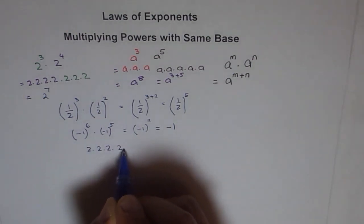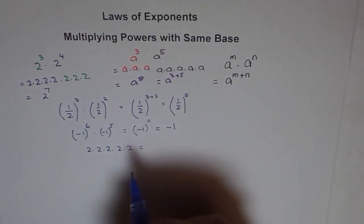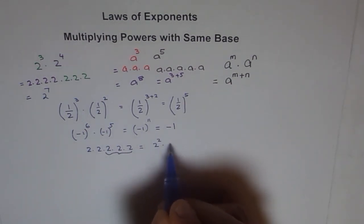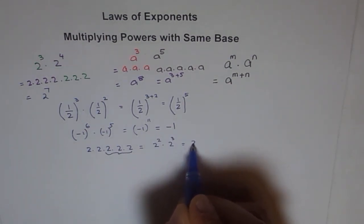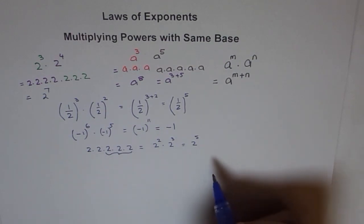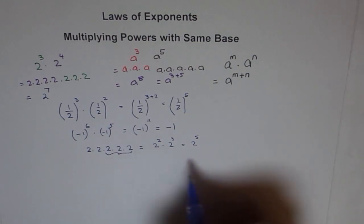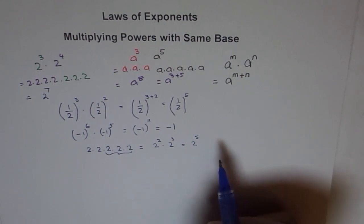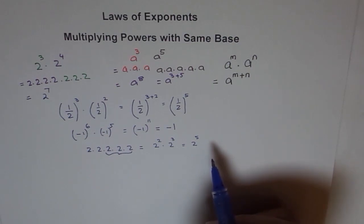Now going the other way: if I write two times two times two times two times two, how can I represent it as a product of two bases? We can club it like this — two squared times two cubed, which is two to the power of five. So in all these cases, when we multiply any exponential expression with the same base, their powers get added, resulting in the sum of their exponents with the same base.